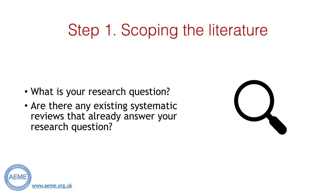Step one to conducting a systematic review is to scope the literature. What is your research question? Has a systematic review answering your research question already been conducted? If so, how long ago was it conducted? If it was performed a while ago, could a search of the literature be conducted now and findings from any new research studies be included? Hence the need for clearly reporting methodology in the systematic review.